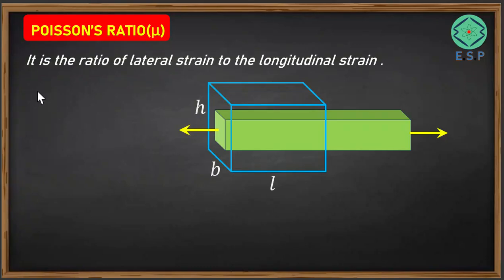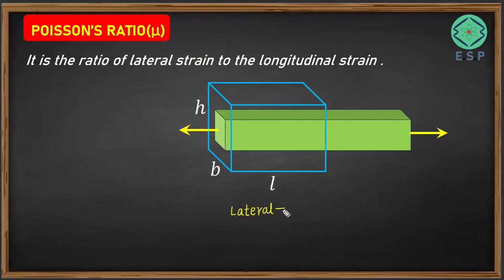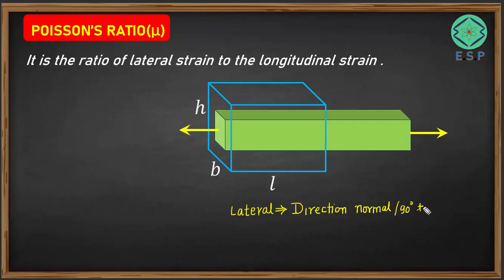We will define what is the Poisson's ratio. Poisson's ratio is the ratio of lateral strain to the longitudinal strain. Lateral is the direction perpendicular to the direction of load — we can say 90 degrees to the direction of the applied load. This is called the lateral direction.